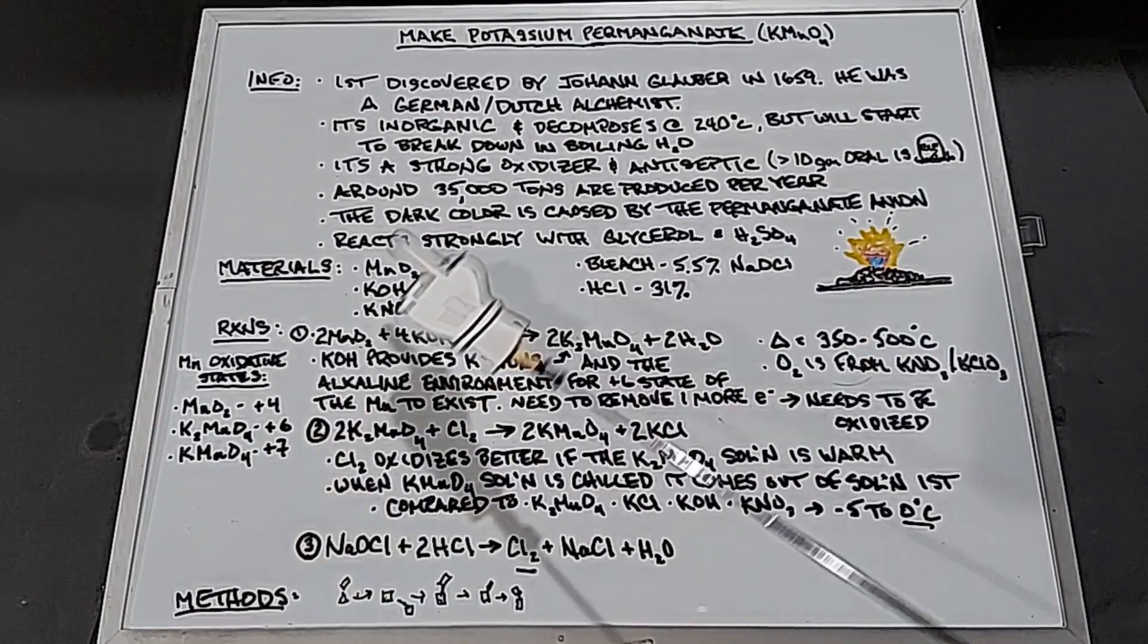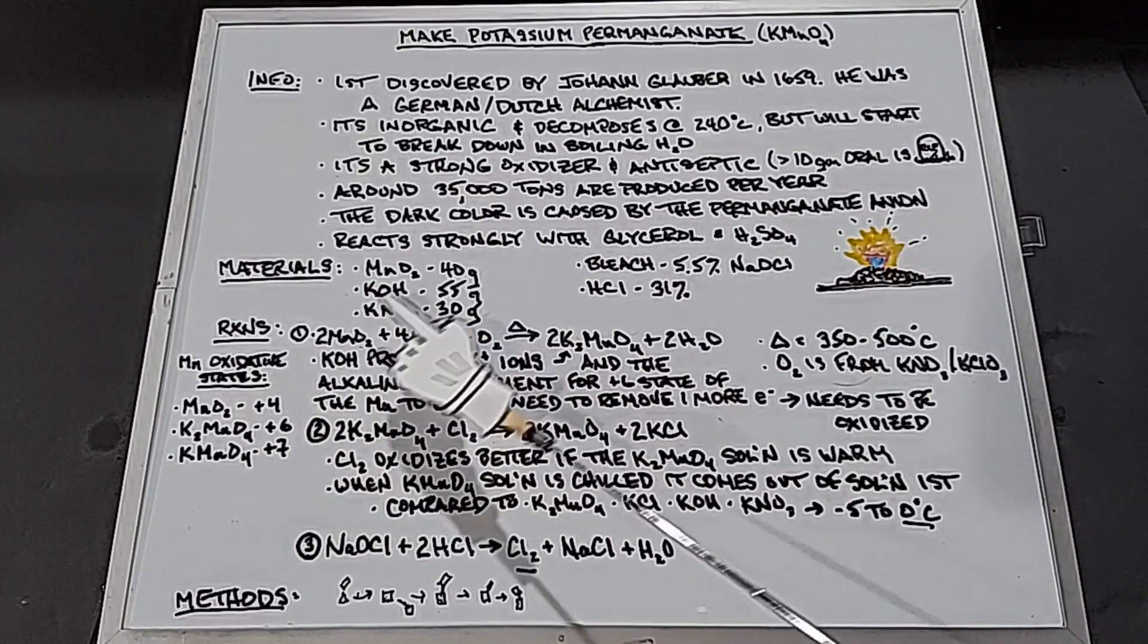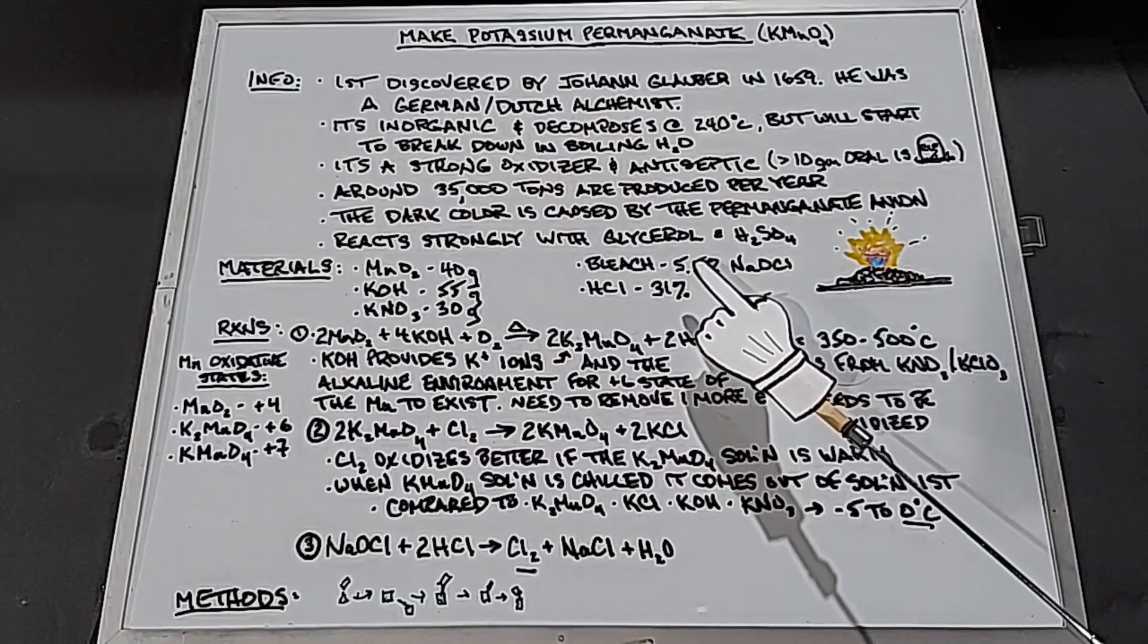The materials we're going to use are manganese dioxide, 40 grams, potassium hydroxide, 55 grams, potassium nitrate, 30 grams, and later on bleach, which will be a five and a half percent solution, and hydrochloric acid at 31%.